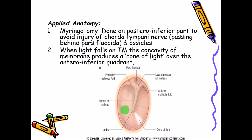When examining the tympanic membrane, the ear has to be pulled upwards, backwards, and laterally, and when a torch is shone, it produces a cone of light. When light falls on the tympanic membrane, the concavity of the membrane produces a cone of light over the anteroinferior quadrant. This flash of light in this region is called the cone of light.